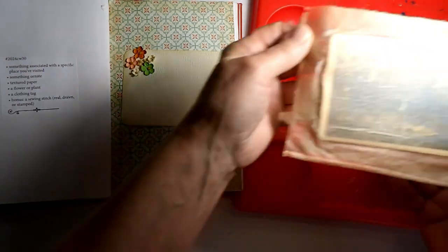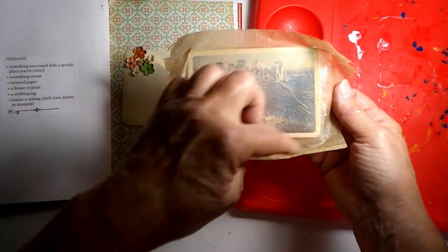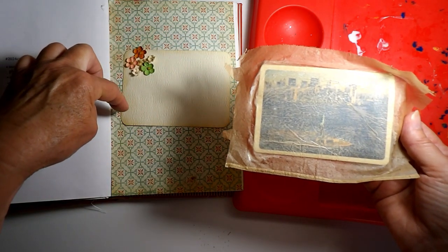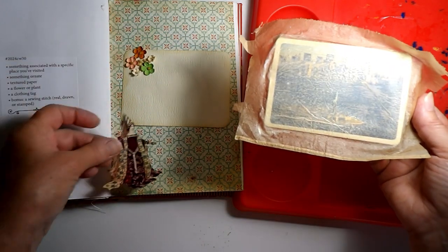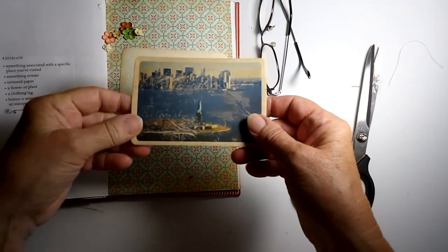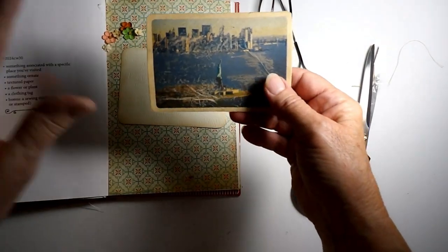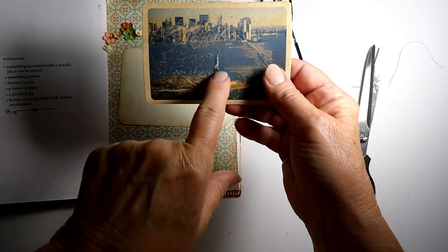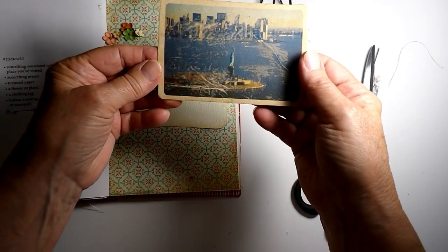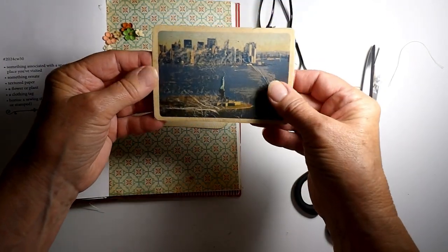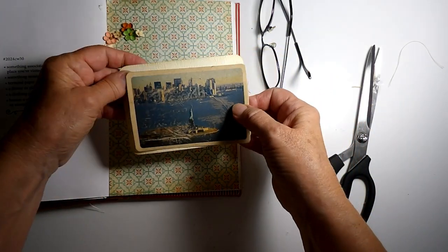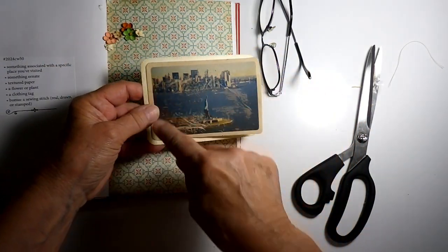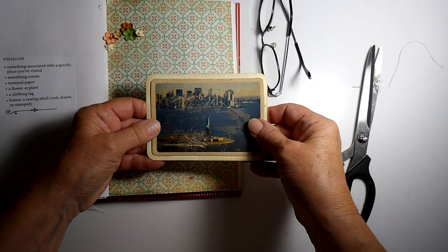And then we will sew it around the edges onto the background and then add our other elements and we're done. So this is dry. And I have to admit I was a little worried that the Statue of Liberty wasn't going to show up. But it is now that it's fully dry. And I'm going to stitch it around here with some pretty orange thread.